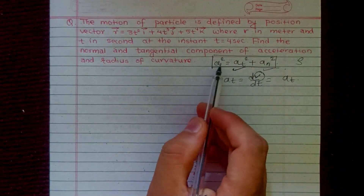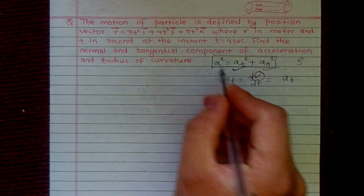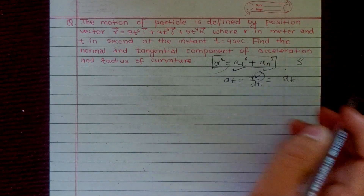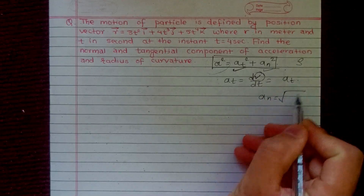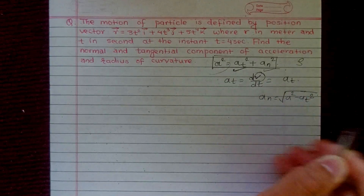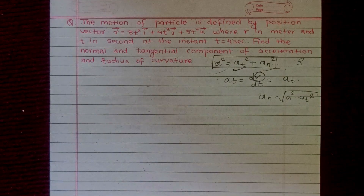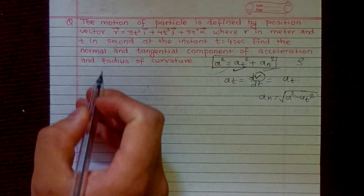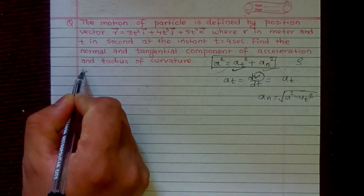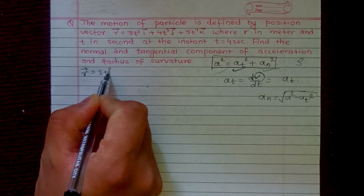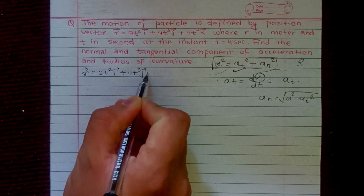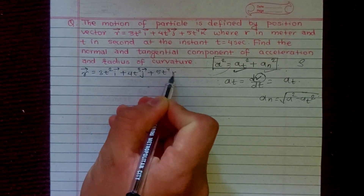The total acceleration will be the magnitude of the acceleration vector. The normal component of acceleration will be aₙ = √(a² − aₜ²). We have been given the position vector r = 3t² i-vector plus 4t³ j-vector plus 5t⁴ k-vector, and time t = 4 seconds.